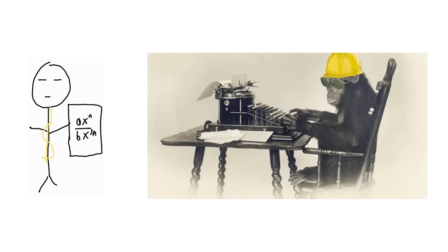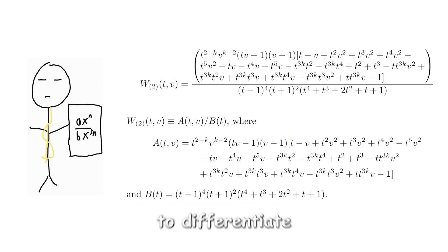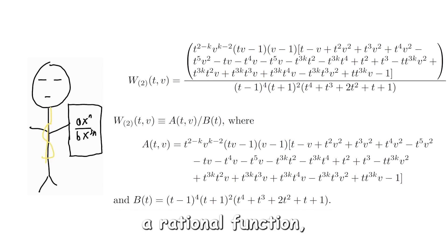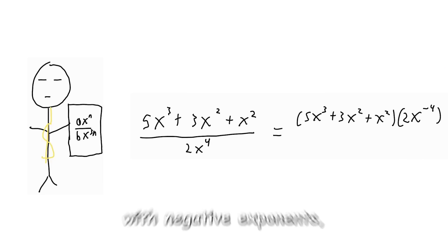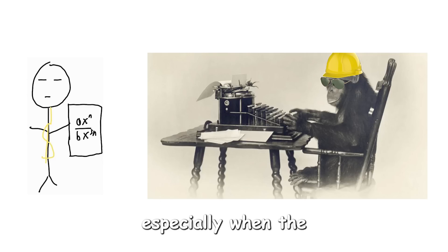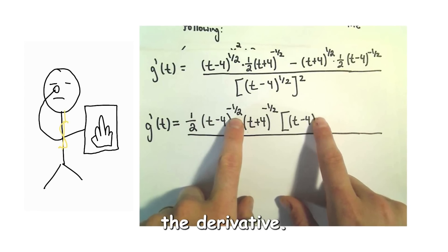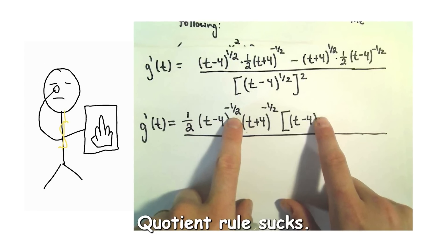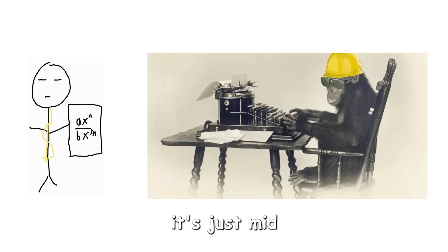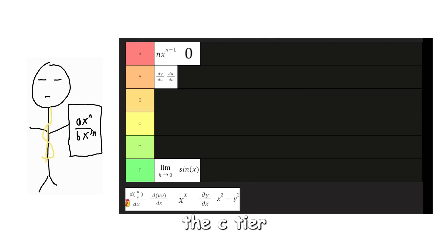Quotient rule is used when you want to differentiate a rational function, but I prefer to use product rule with negative exponents. Especially when the teachers are sadists and ask you to simplify the derivative, quotient rule sucks. Overall, it's just mid, so I will give it the C tier.